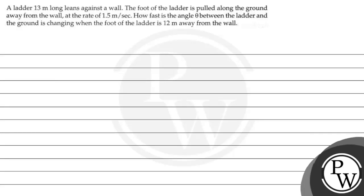Hello, let's first read the question. The question says that a ladder is 13 meters long, leaning against a wall. The foot of the ladder is pulled along the ground away from the wall at a rate of 1.5 meters per second. How fast is the angle theta between the ladder and the ground changing when the foot of the ladder is 12 meters away from the wall?